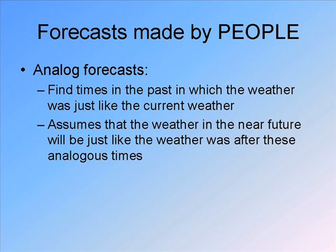A lot of climate forecasting or long-range forecasting is analog forecasts. If they're trying to figure out what kind of summer we're going to have — warm, wet, or dry — they look at other years that had a similar spring, maybe unusually warm and wet in the southeast, or a similar situation with El Niño. Then they ask what happened in the following summers. That's an analog forecast and it's a perfectly legitimate way to make certain kinds of forecasts.